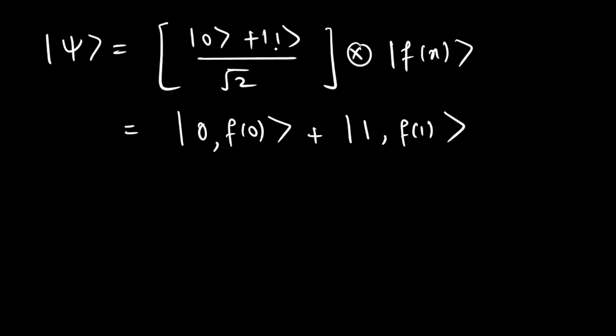This is the state ψ. Now in this state ψ the different terms contains information about both f(0) and f(1). It is almost as if we have evaluated f(x) for two values of x simultaneously.